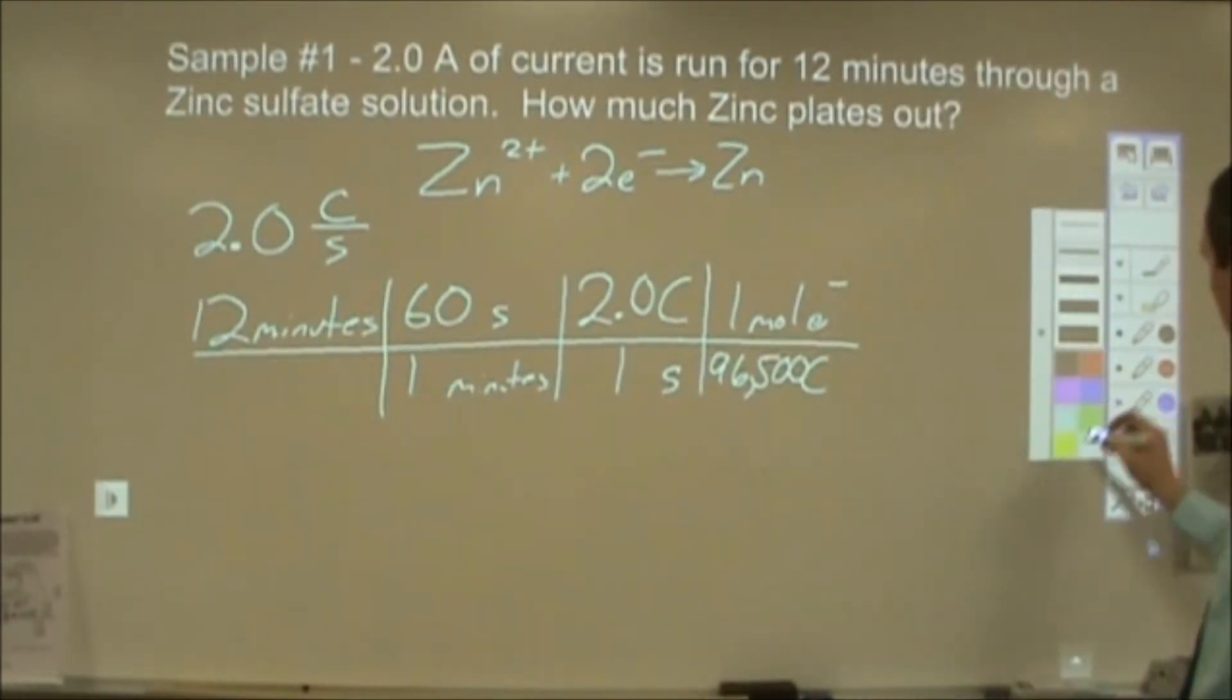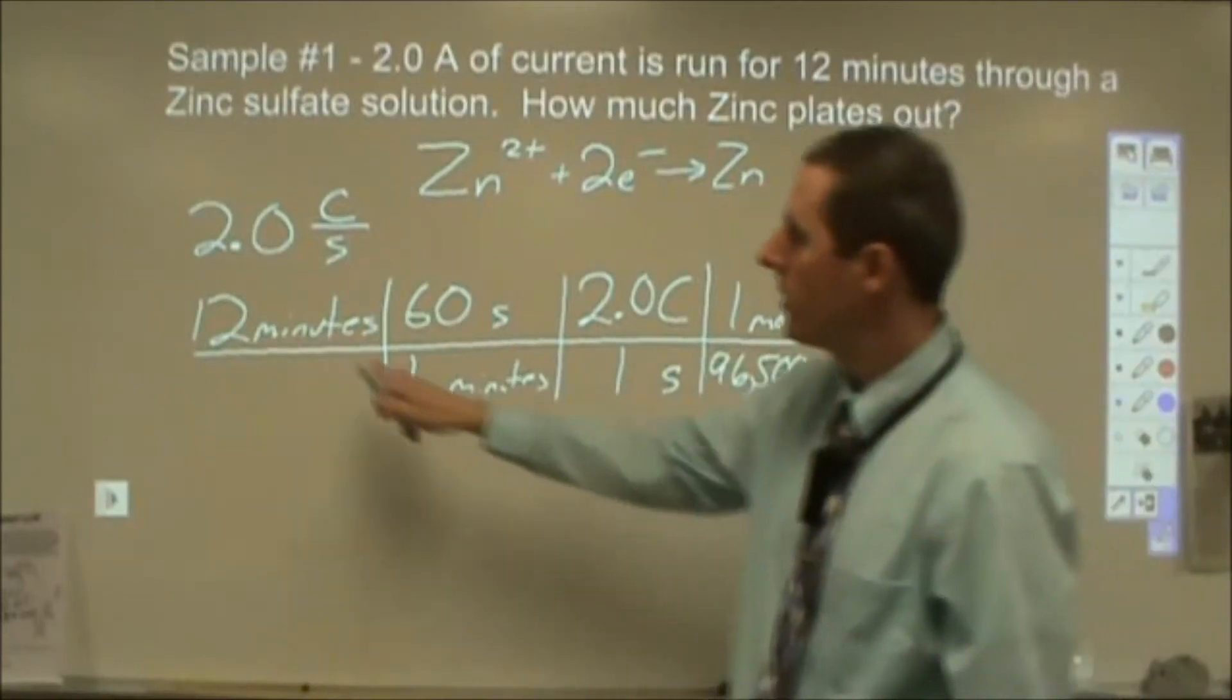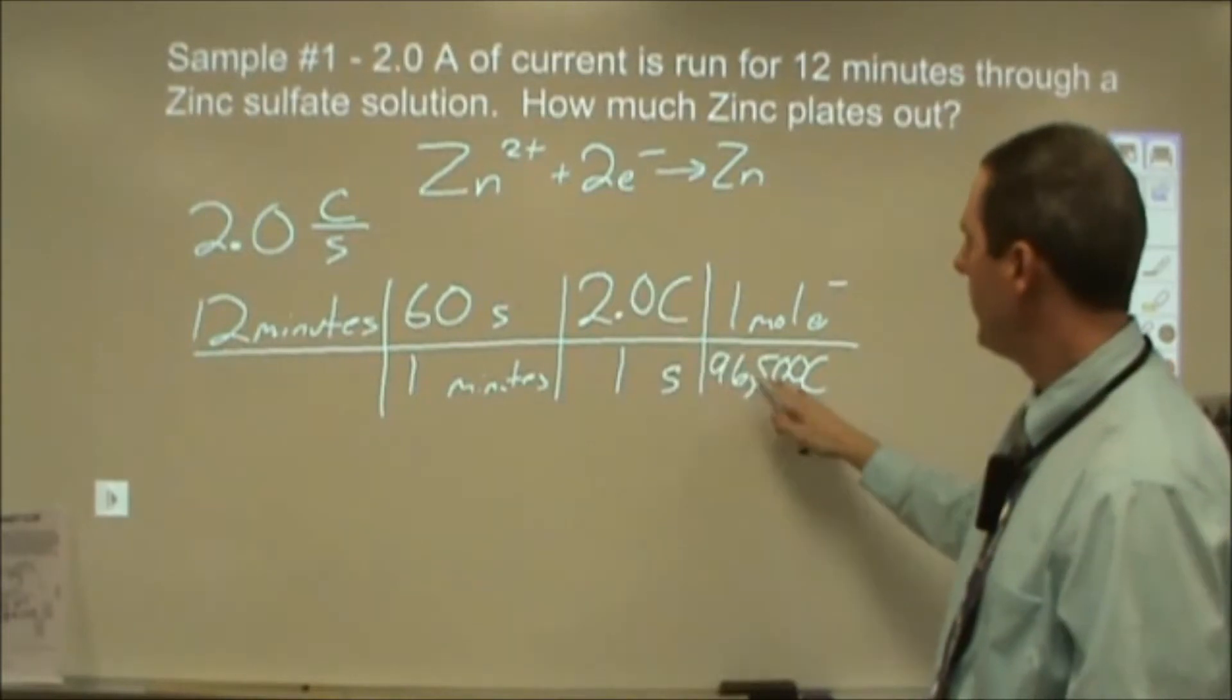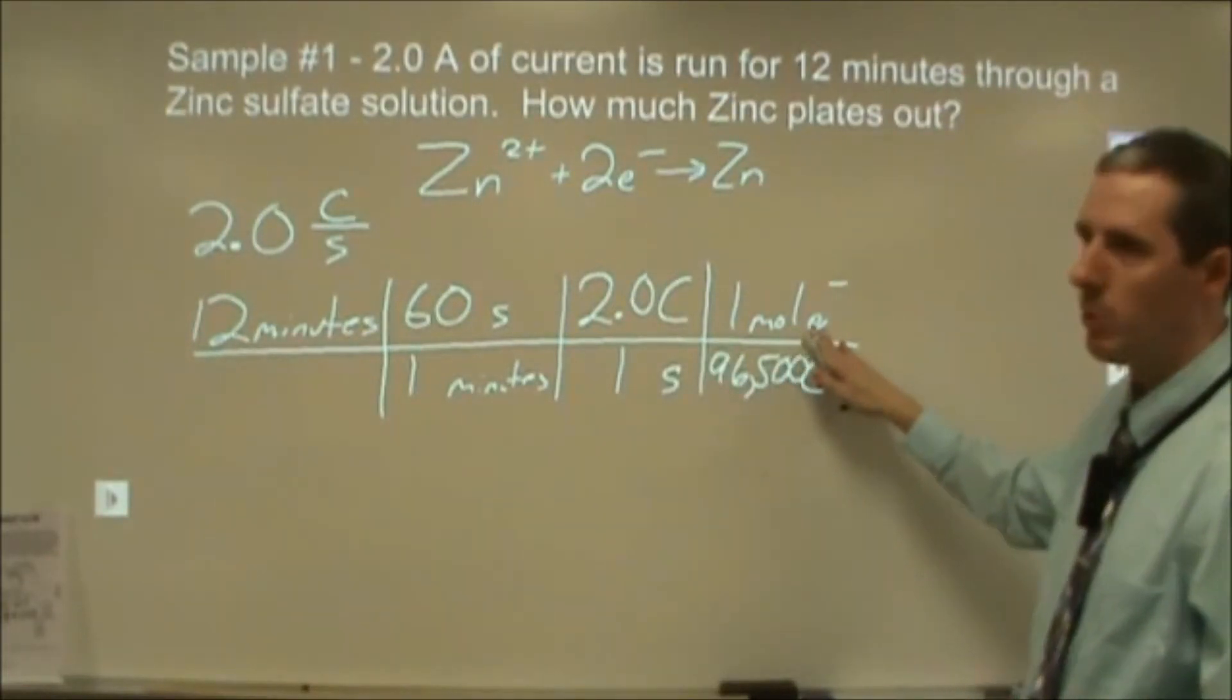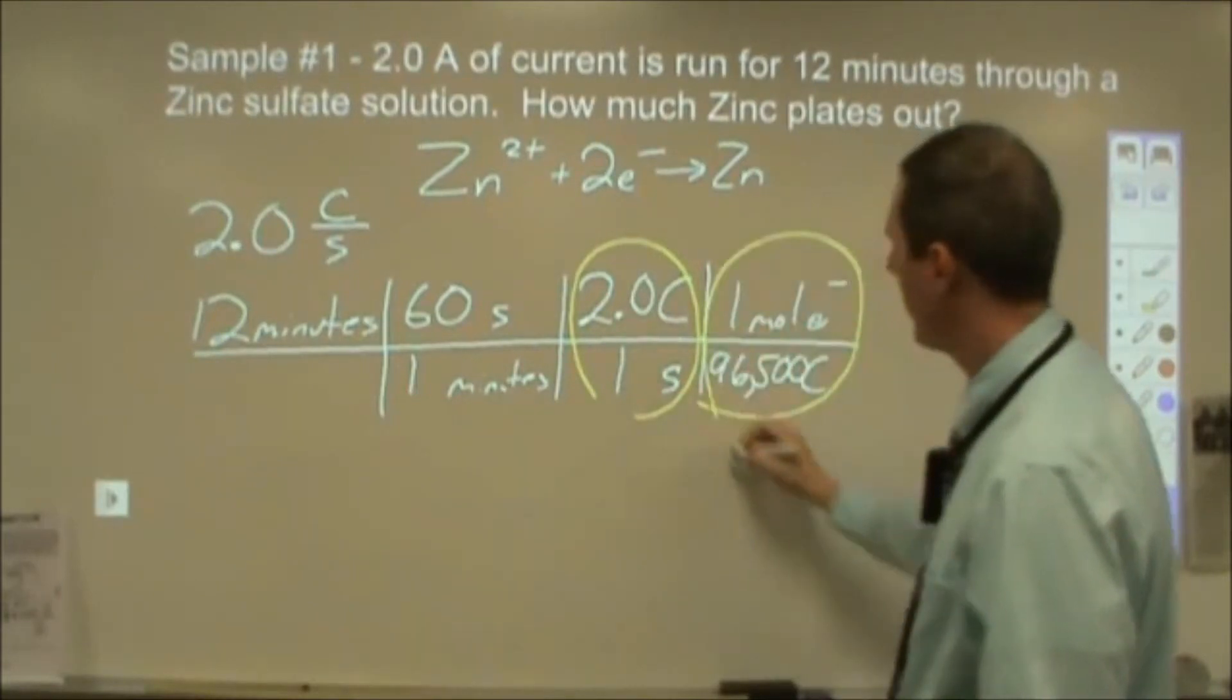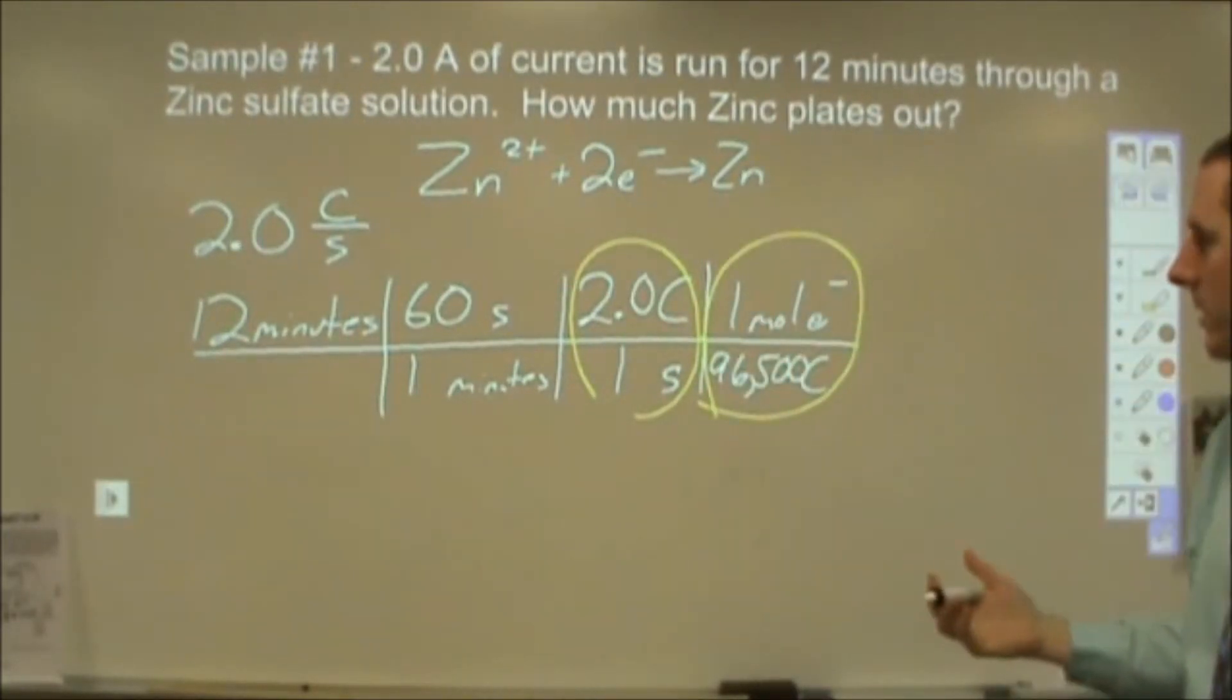So let's retrace what we just did there. We started with time as our given. We used our amperage to convert that into charge. Then we used the Faraday constant to turn that into moles of electrons. So this step and this step are kind of your two new critical physics things.